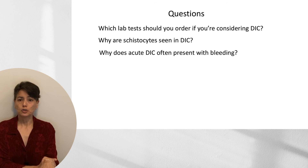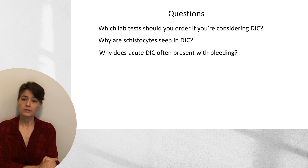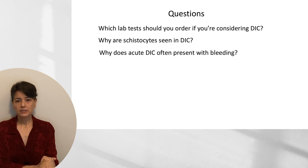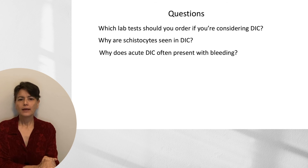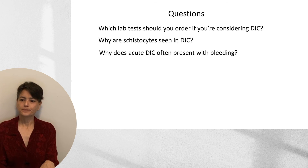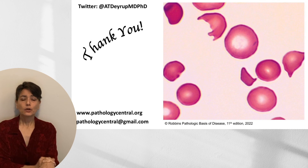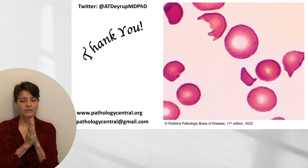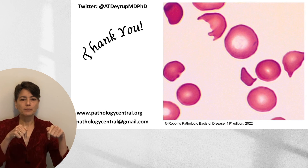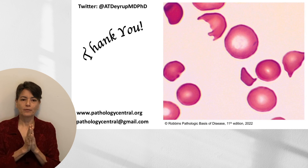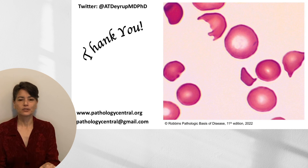To finish up, here are a few questions to test what you've learned: Which lab tests should you order if considering DIC? Why are schistocytes seen in DIC, and how does that relate to the pathophysiology? And why does acute DIC often present with bleeding? Thank you very much for your time and attention. I hope you found this useful — please put comments down below, as I find them helpful when constructing my videos.